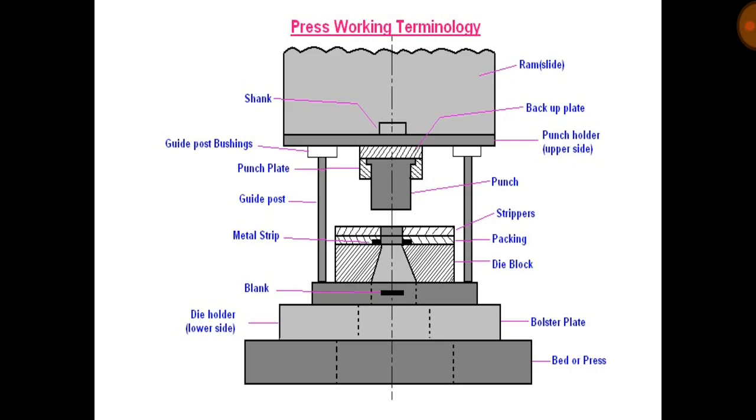Press machines are sometimes named as metal forming machines. These machines are divided into two elements: the machines, and cutting and forming dies. So let's get into the press working terminology.